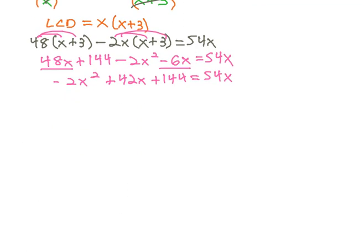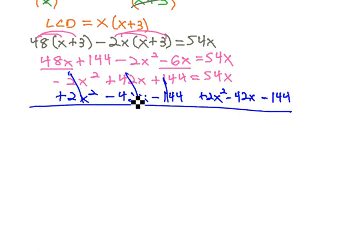We want the equation to equal zero. We also like x squared to be positive, it's not right now, so let's add two x squared. We'll subtract forty-two x and we'll subtract 144 from both sides, plus two x squared minus forty-two x minus 144.